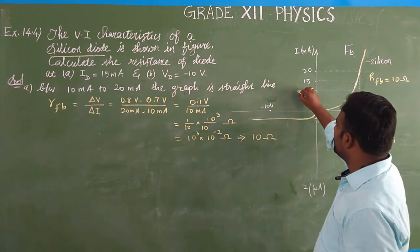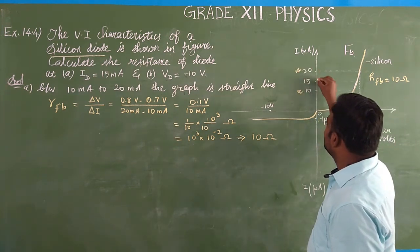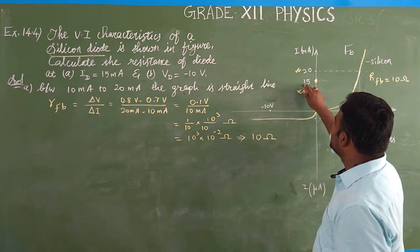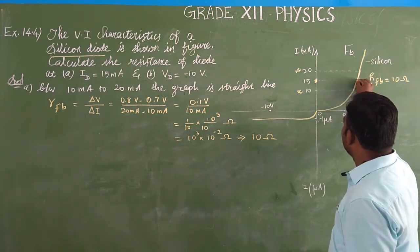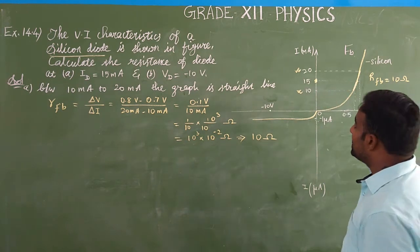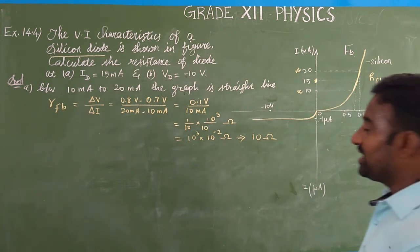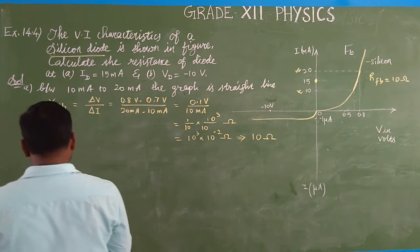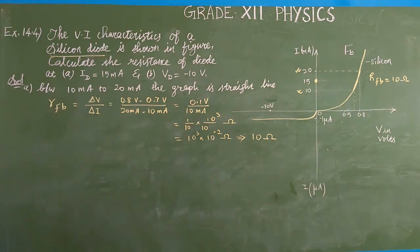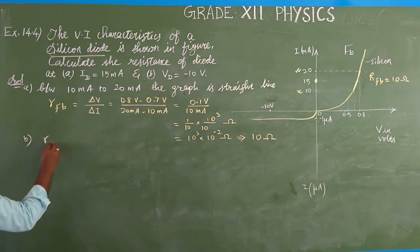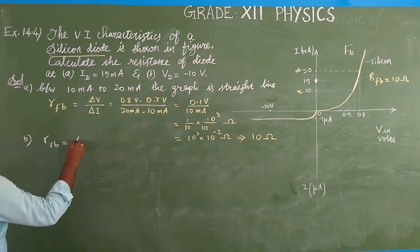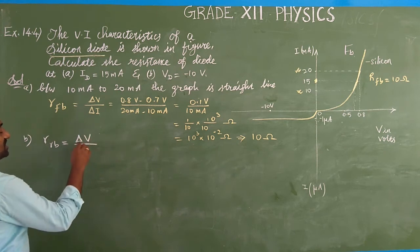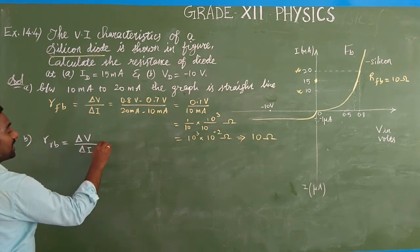It is between the two values, and they are given when the current is 15 milliampere, what is the resistance? Because 15 milliampere lies between 10 and 20 milliampere, the resistance remains unchanged at 10 Ω. Next, we are going to find the resistance in reverse bias. The resistance in reverse bias is equal to the ratio between change in applied voltage and change in current.